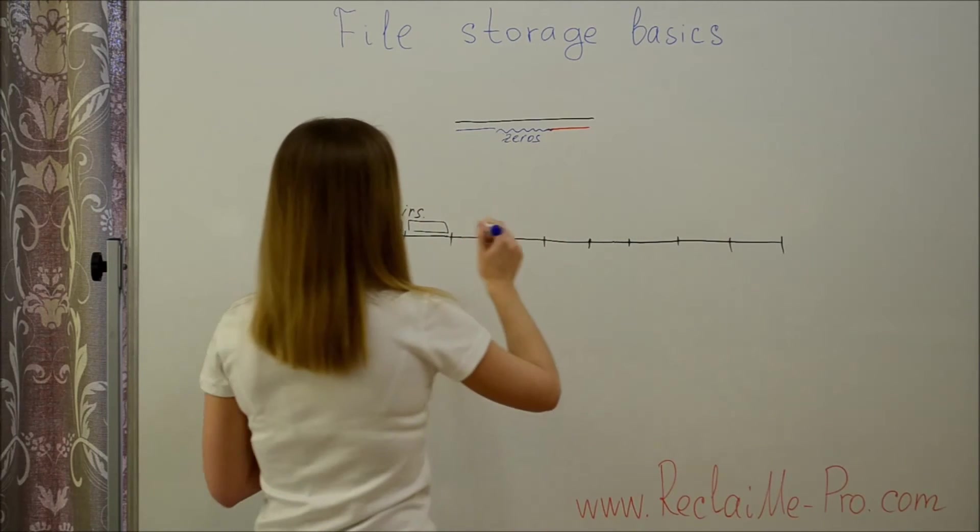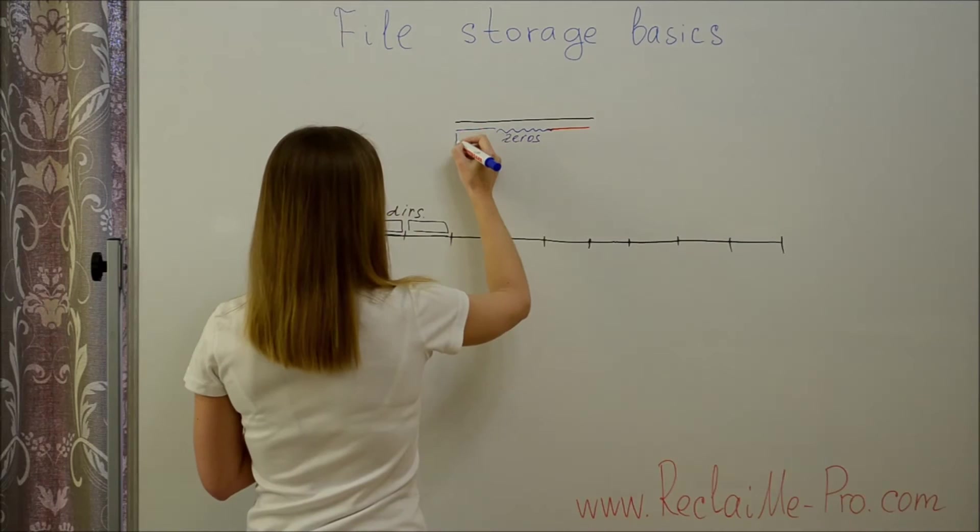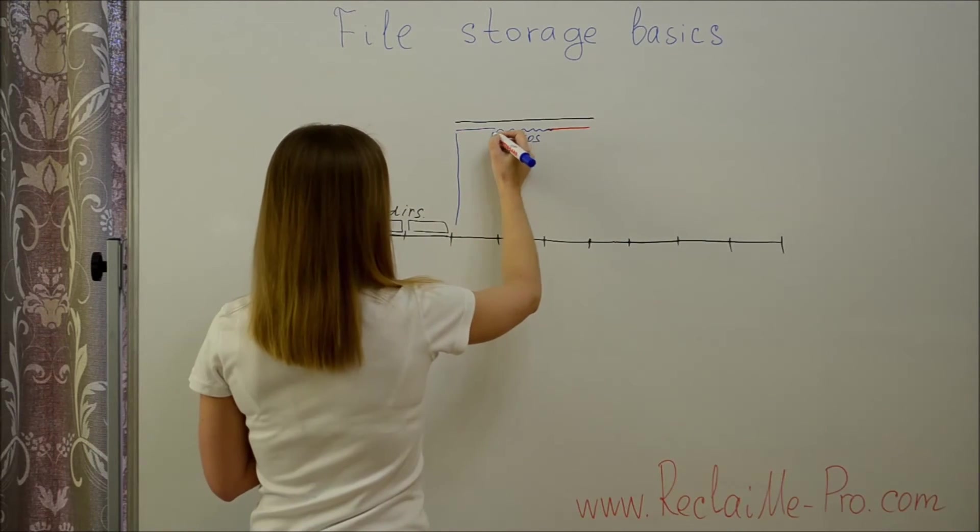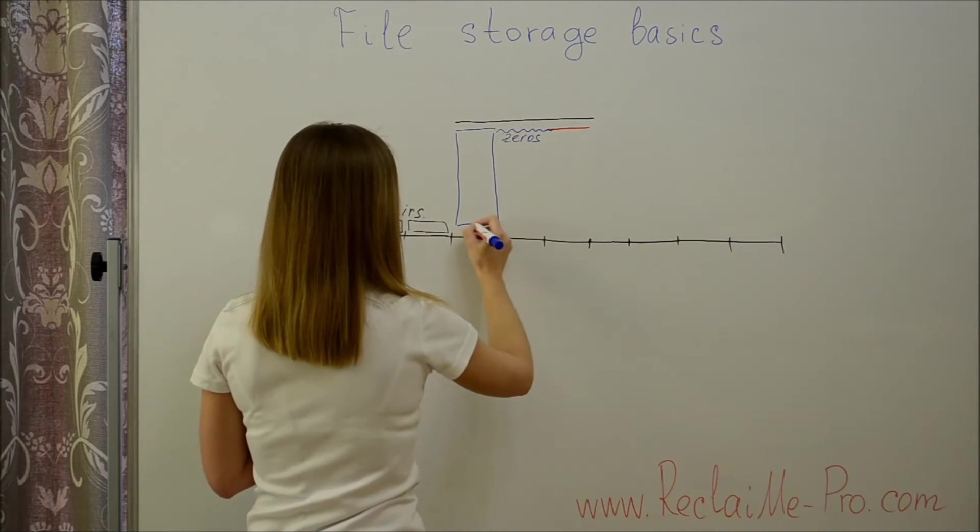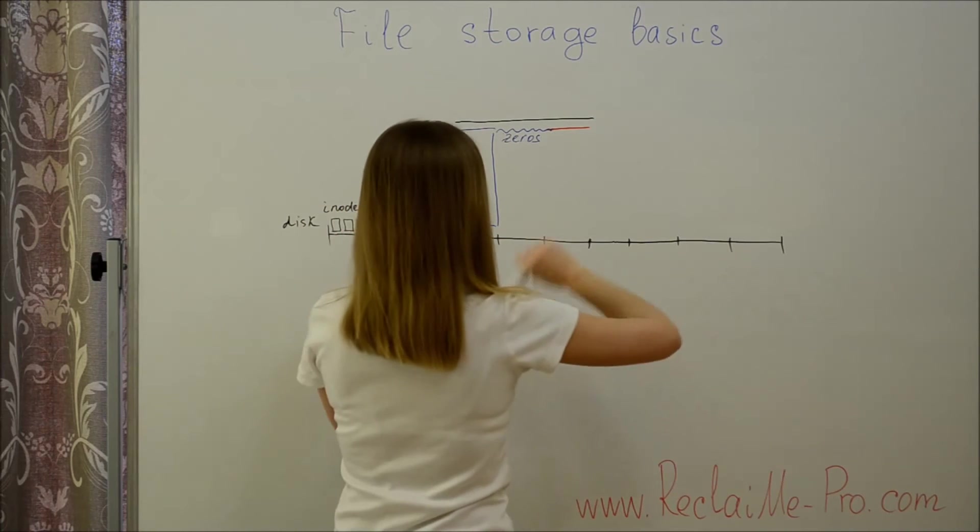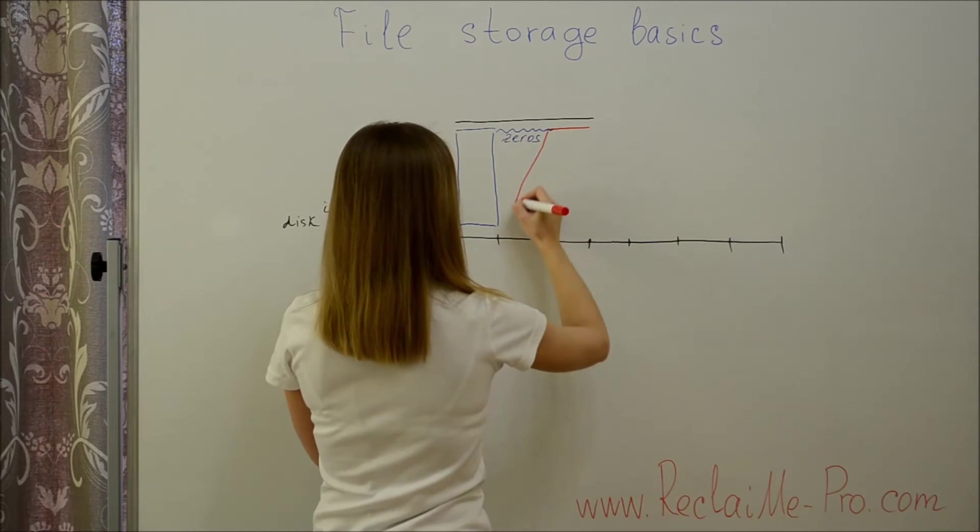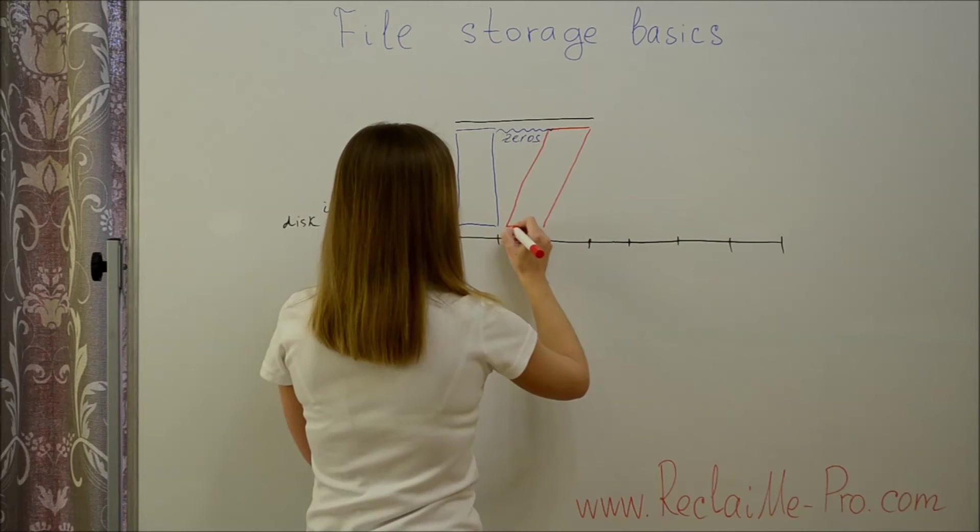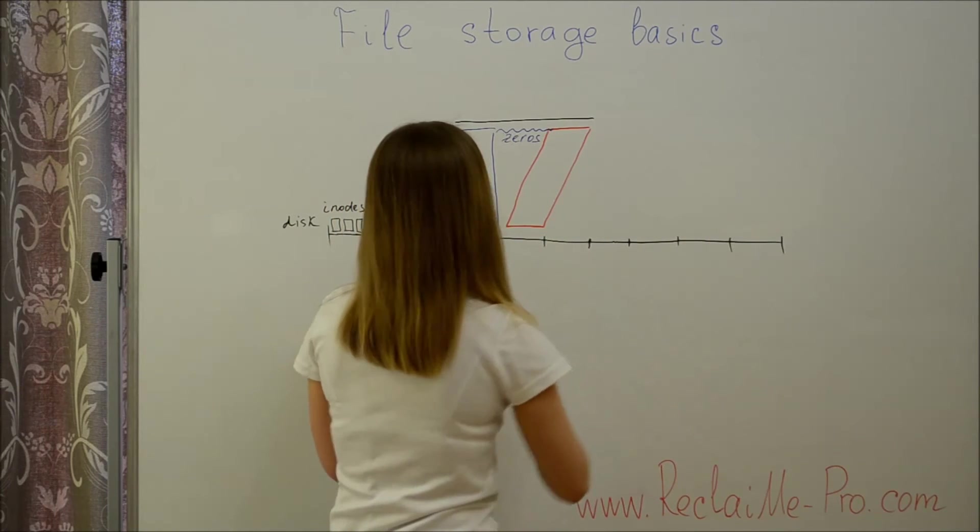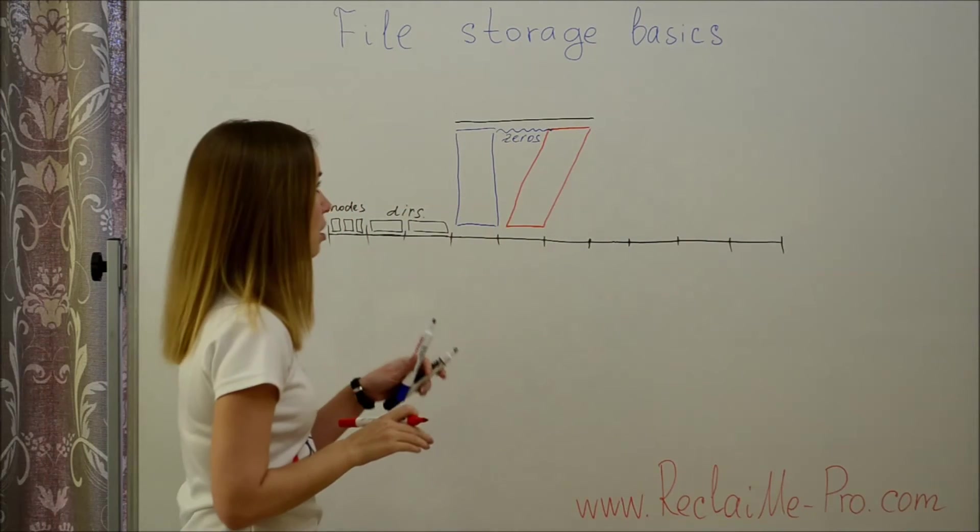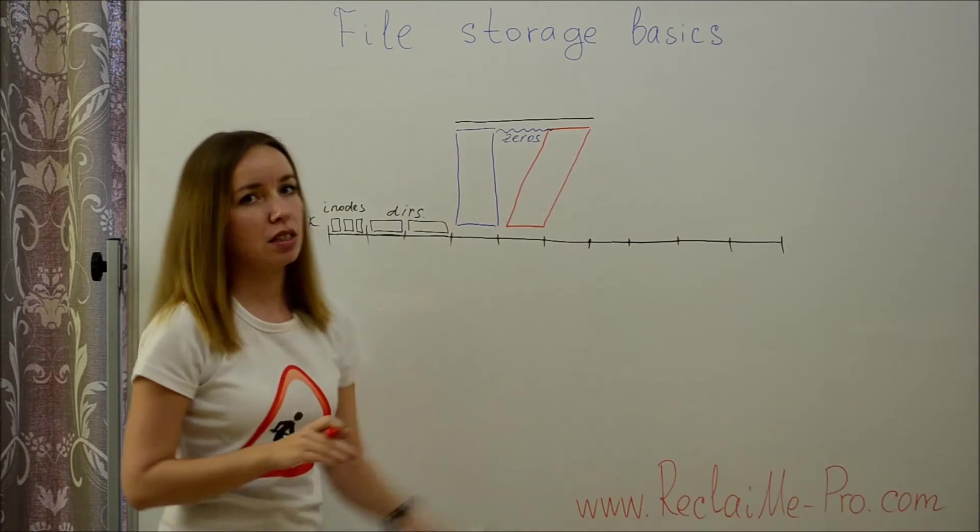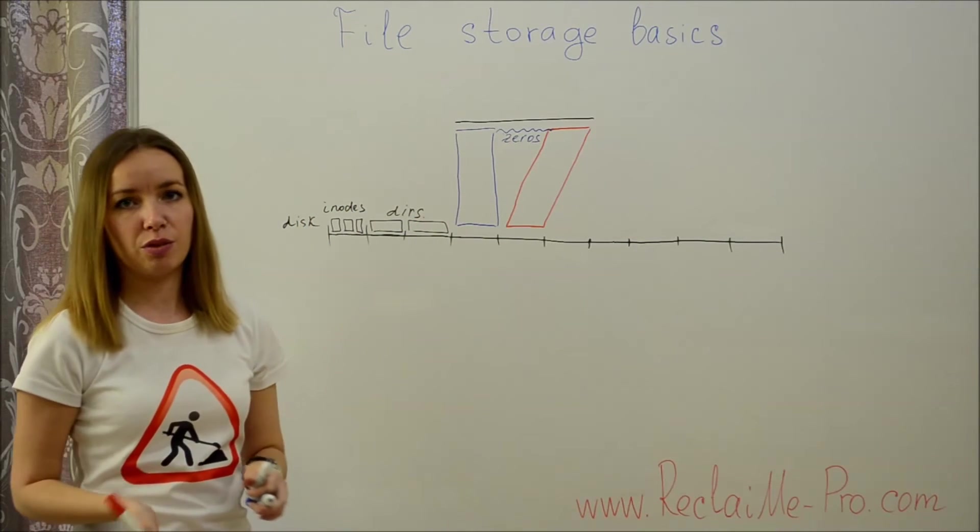In this case, only non-zero data will be actually stored. And the file will occupy the same space no matter how many zeros are in the middle of the file.